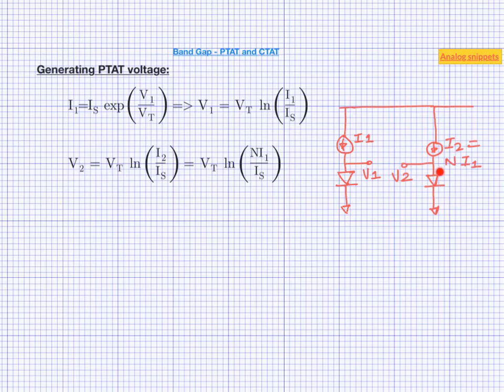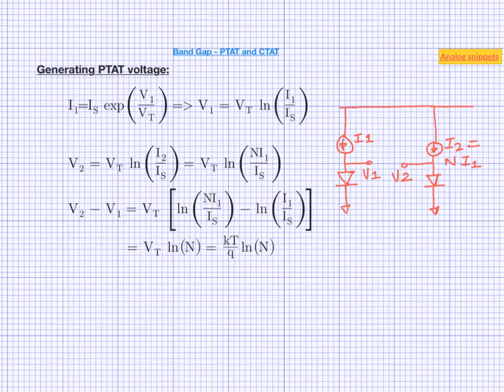V2 would be obviously higher than V1 because we are pushing higher current into a similar device. Now let us consider the difference of these voltages. Amazingly this difference reduces to even simpler equation.